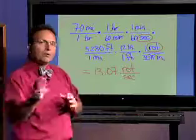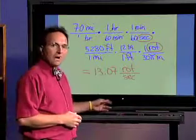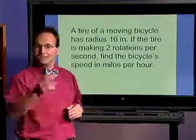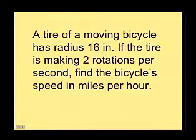All right. Well, you know what? Now it's time for you to try a problem. So the problem is going to be similar to the example we just did, and here it is for you. A tire of a moving bicycle has radius 16 inches. If the tire is making two rotations per second, find the bicycle's speed in miles per hour. Pause the video to work on this problem, and when you're finished, restart the video to check your solution.